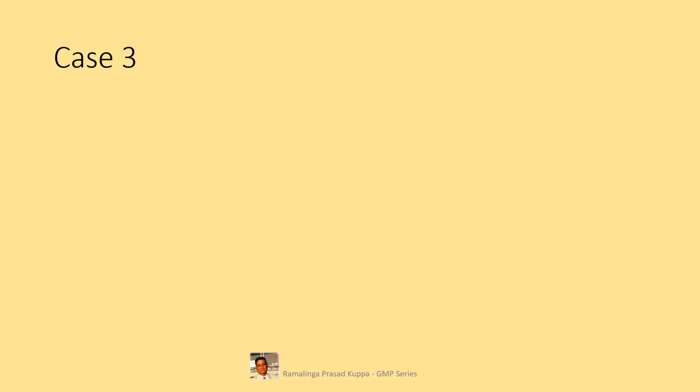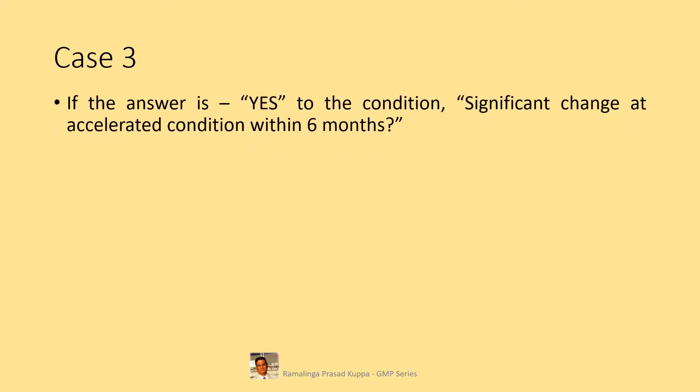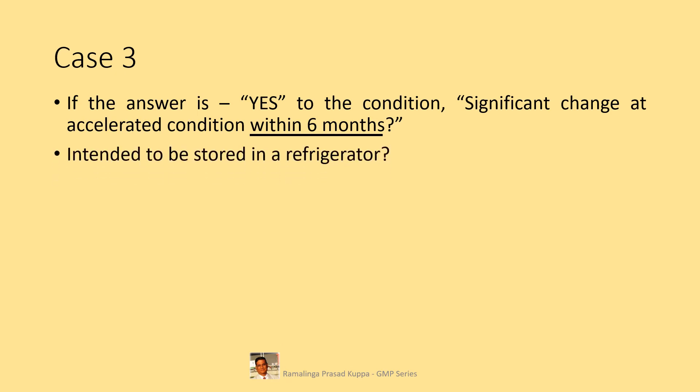Let us see Case 3. If there is significant change at accelerated conditions within 6 months, answer the next question: is the product intended to be stored in a refrigerator? If it is proposed to store the product at a lower temperature than controlled room temperature — that is, 25°C — it is necessary to approach as described in Cases 1 and 2. If the answer is no, go to the next query.